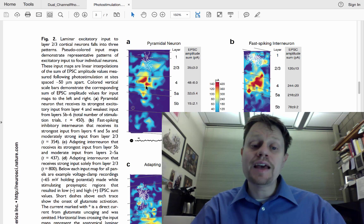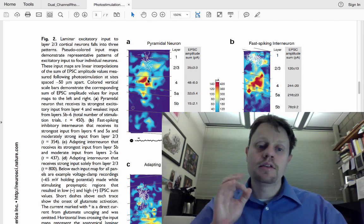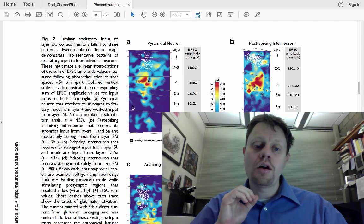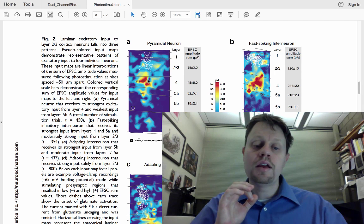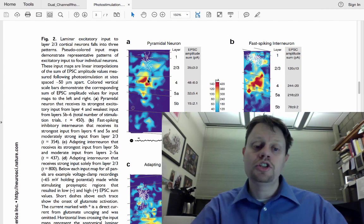So, if instead of using caged glutamate, we infected these layer 4 cells with channelrhodopsin, we could then stimulate along the dendrite and activate the presynaptic terminals from these layer 4 neurons, and wherever we see activation of our layer 4 neuron, now that tells us not where the cell body is that makes input onto our pyramidal neuron in layer 2-3, but rather where the synaptic terminal that we're directly stimulating with channelrhodopsin.